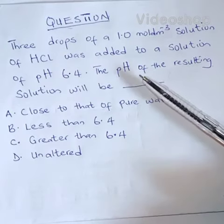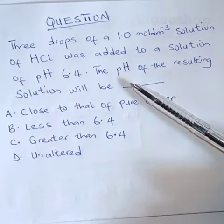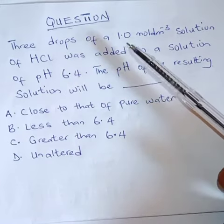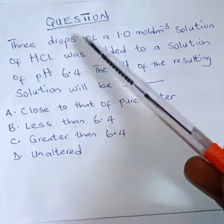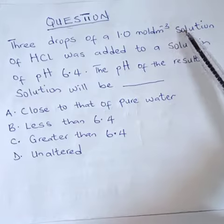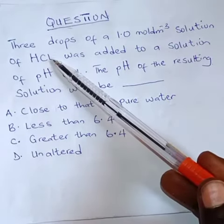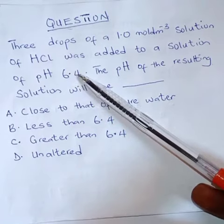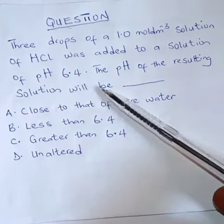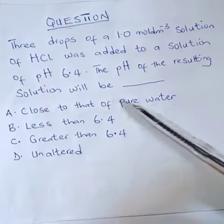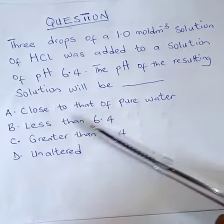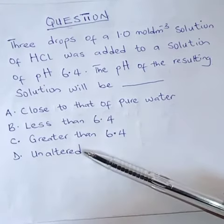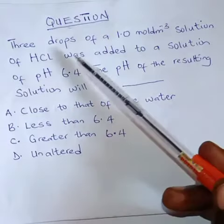Now we have a question to solve. This question requires no calculation, so we just have to reason it together. It says three drops of a 1.0 mole per dm³ solution of hydrochloric acid was added to a solution of pH 6.4. The pH of the resulting solution will be... The options given are: A) close to that of pure water, B) less than 6.4, C) greater than 6.4, D) unaltered.